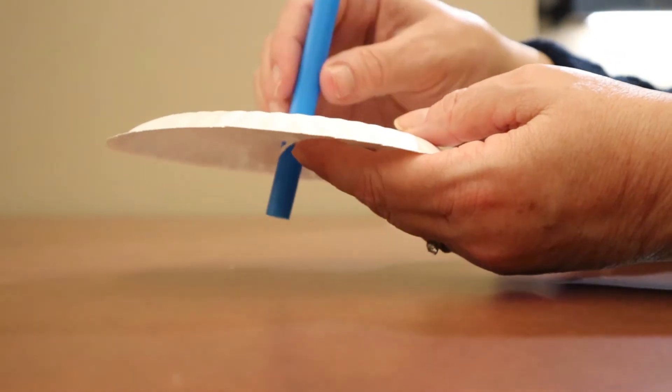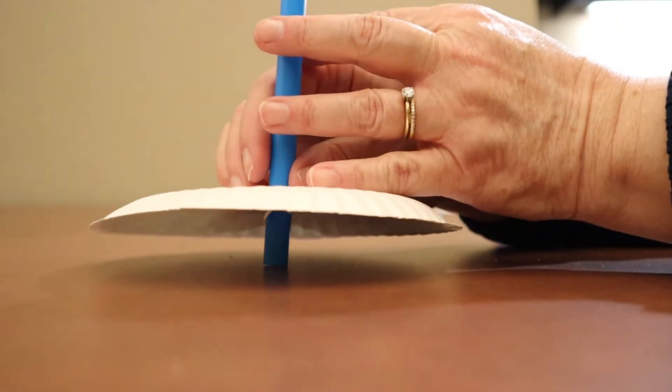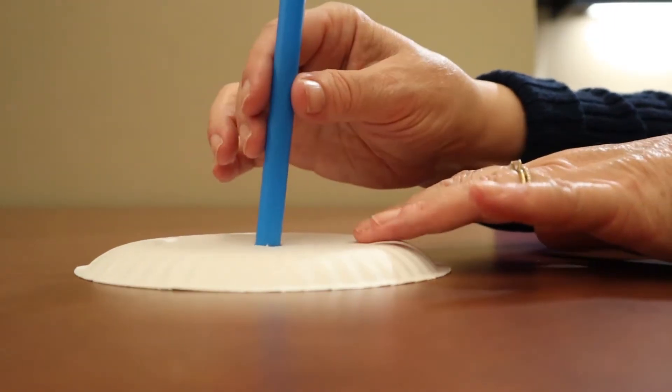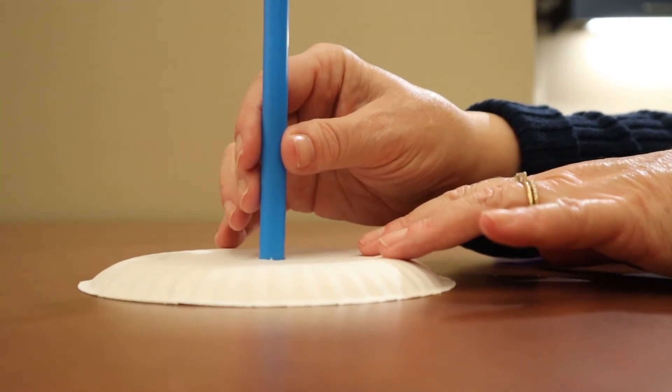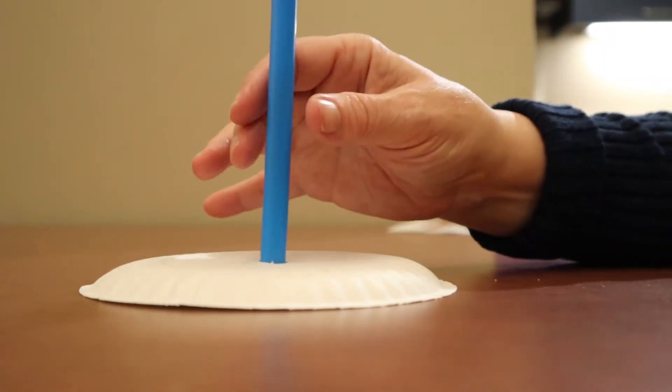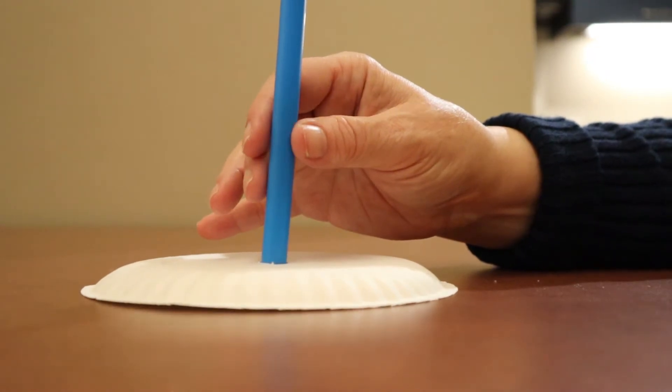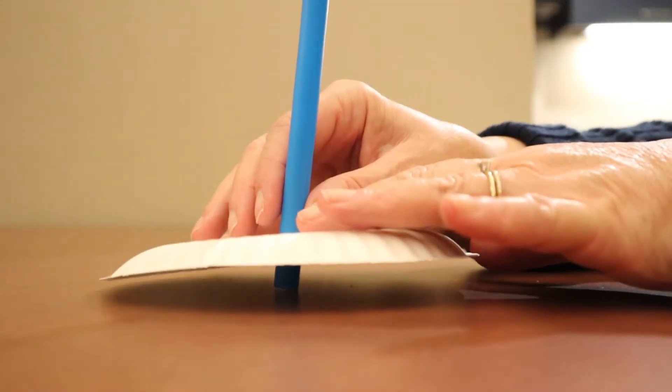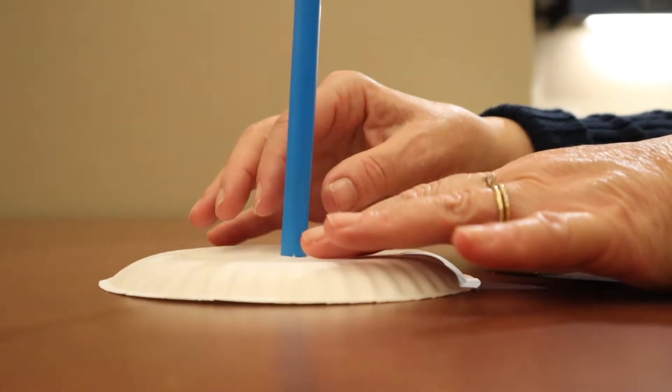When your straw is through the paper plate, make sure that your plate is down far enough to touch the table and that the straw is not really touching the table. You don't want it up like this because your project isn't going to work.